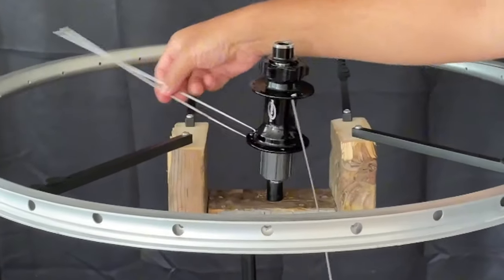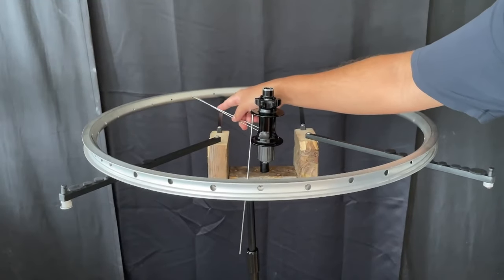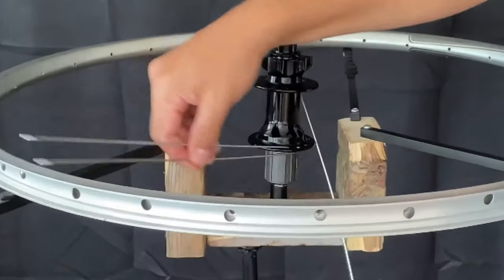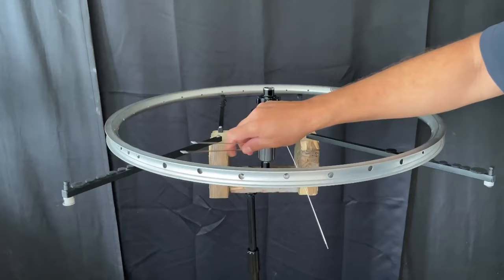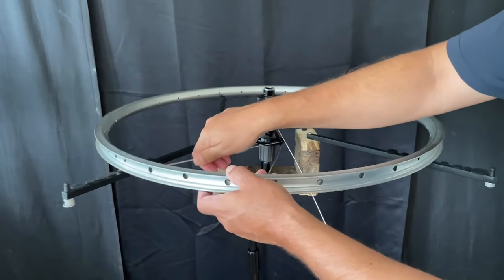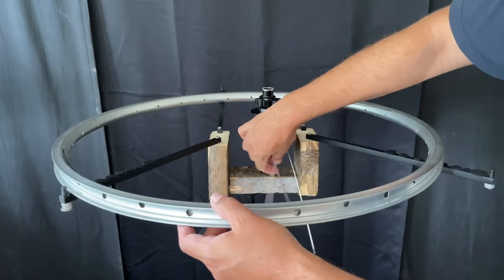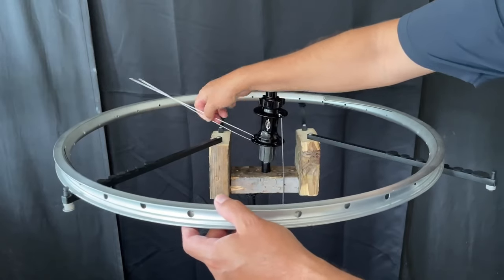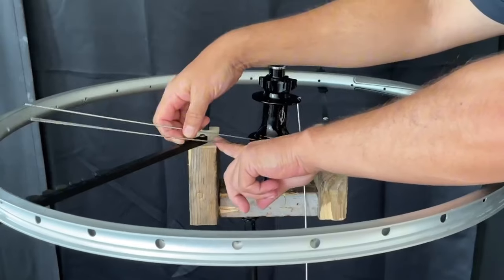So here you can see the spokes, they just fit right over the little arms there. And in case you were thinking that the blocks of wood would get in the way of the spoke rotation, you'd be wrong.